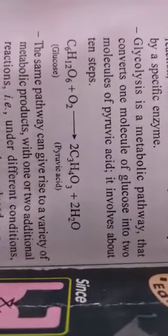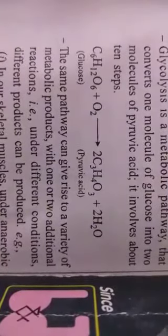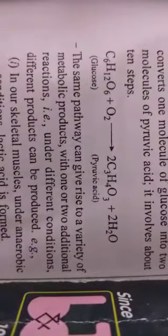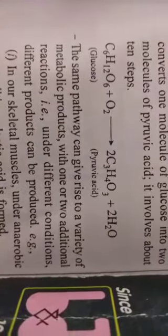Those 10 steps require 10 different enzymes to activate them. The same pathway can give rise to a variety of metabolic products. Naturally, with 10 steps, 10 different things will be formed. With one or two additional reactions under different conditions, different products can be produced. If you change conditions, the products will also change.